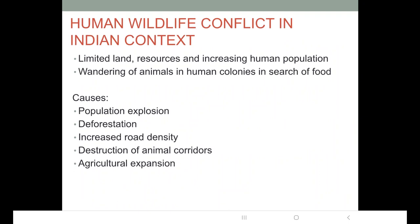Then we discussed human-wildlife conflict in the Indian context. The causes include increasing human population — in order to feed the increasing population, forests are cleared for agriculture; to meet the needs of shelter for the increasing population, forests are cleared. As a result, the habitats of wild animals are reduced and they naturally come out into human settlements. Shrinking of the forest is the main reason.